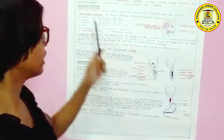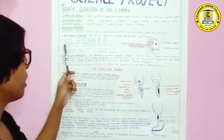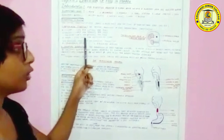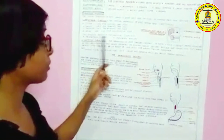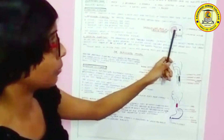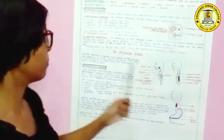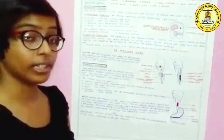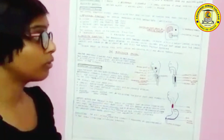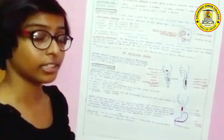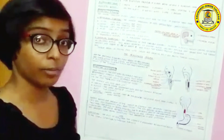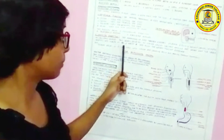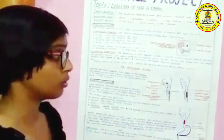Mechanical digestion is the physical breakdown of food with the help of teeth — a process called mastication. The four types of teeth are: incisors for cutting, canines for tearing, premolars for grinding, and molars for grinding. Two muscles assist in mechanical digestion: the temporalis muscle and the masseter muscle. Chemical digestion is the breakdown of food through enzymes. In the mouth, saliva is secreted by the salivary glands, which contains the enzyme salivary amylase.